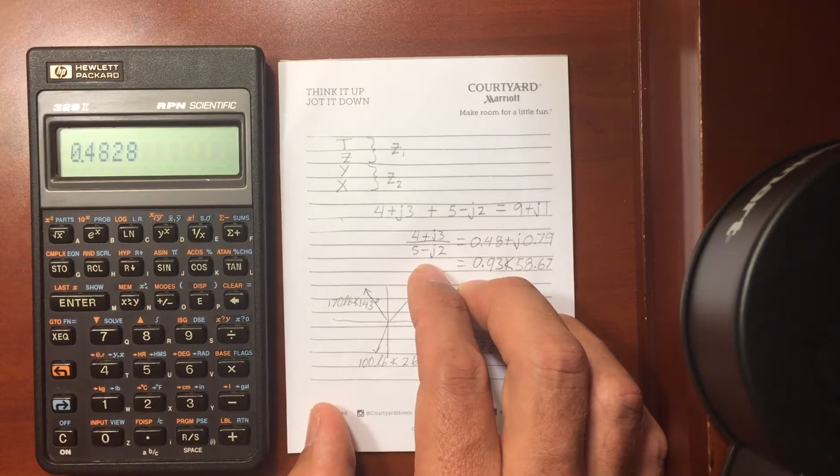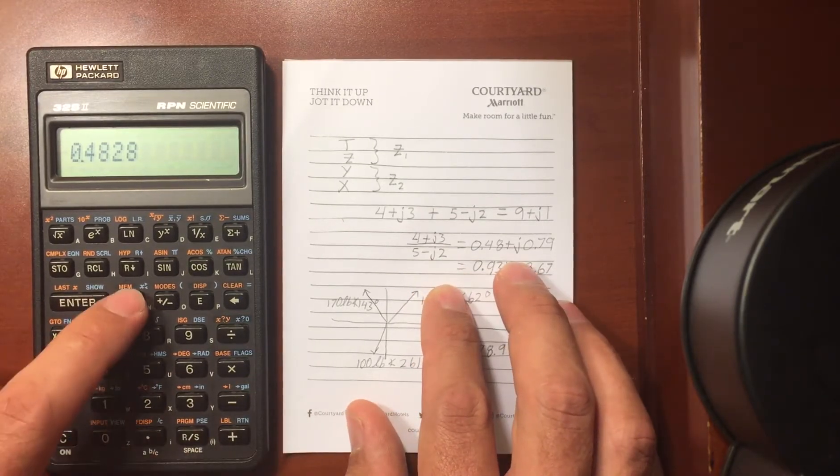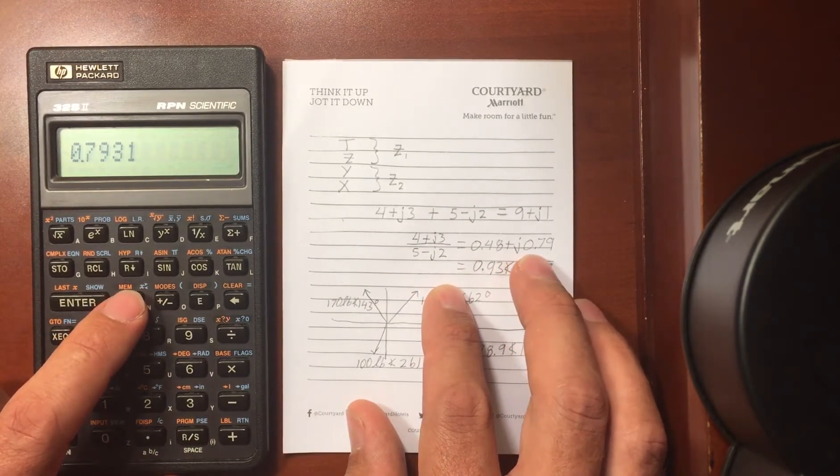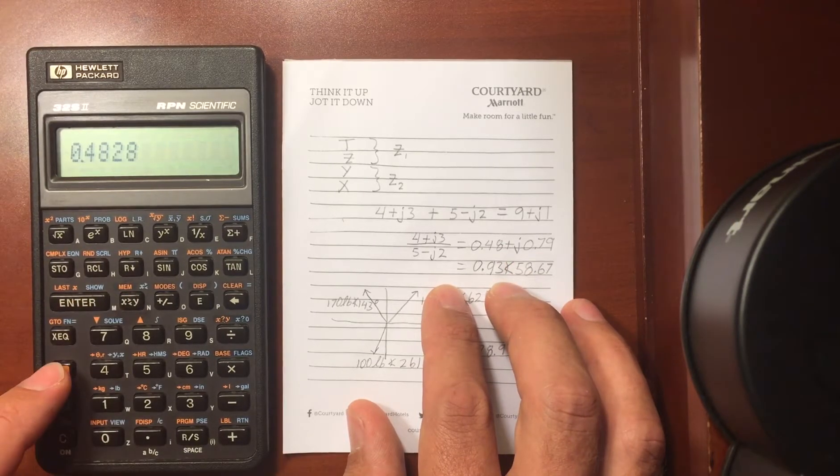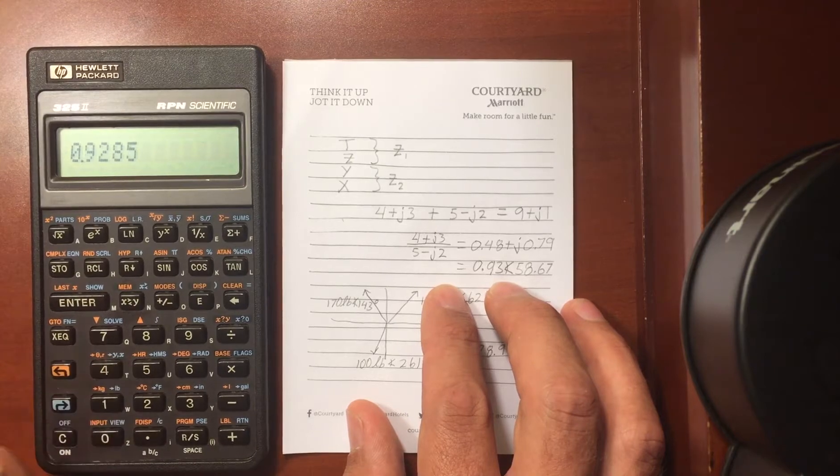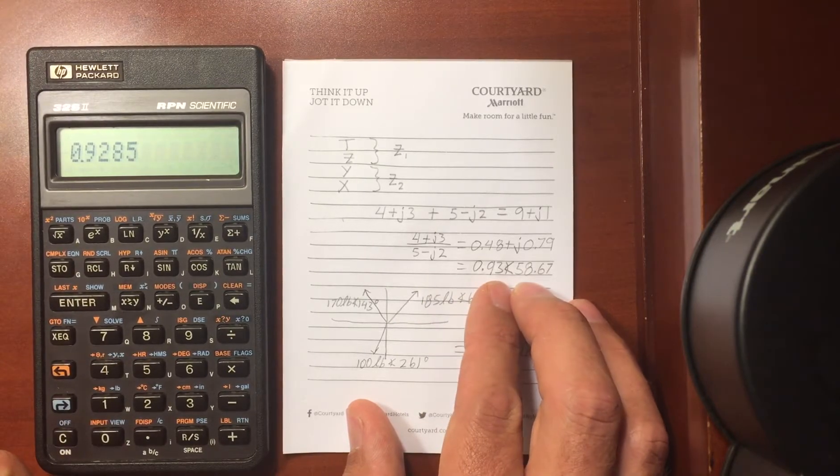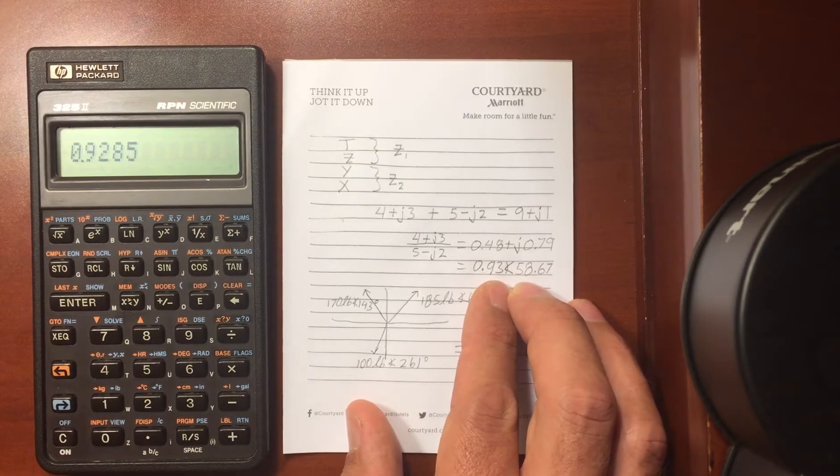This should give me 0.48 plus J.79, and if I wanted to swap those to polar, I could use the conversion right here, swap to polar, that gives me 0.93 at angle 58.67.